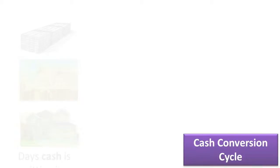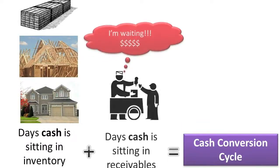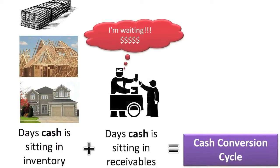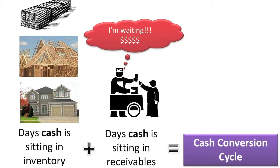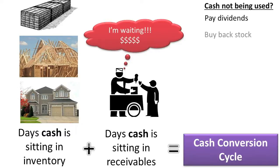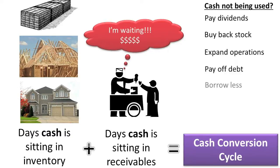The Cash Conversion Cycle attempts to show how long the company's cash is tied up in inventory and in accounts receivable. When a company's cash is not tied up in inventory or receivables, the company can use it for other purposes, such as paying dividends, buying back stock, expanding operations, paying off debt, and borrowing less.